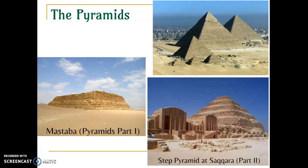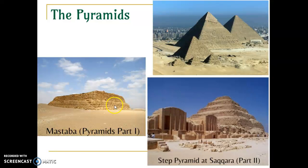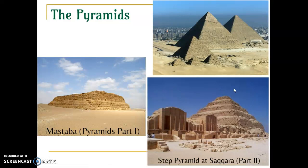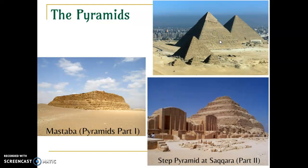You'll need to recognize these on the test. This is one of the oldest versions — the Mastaba — that's part one, as they worked on their technique. Then they start to build the pyramidal structure at Saqqara — the step pyramid — that's part two. And then, of course, the ultimate goal — part three — the most famous pyramids at Giza.